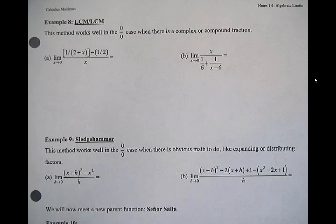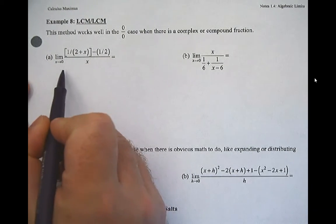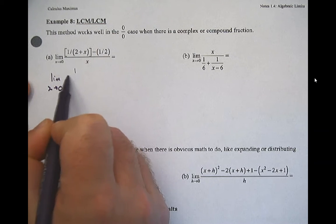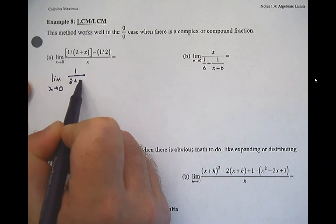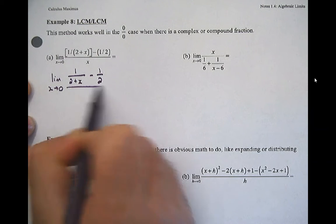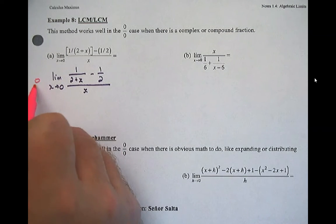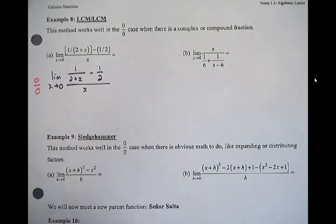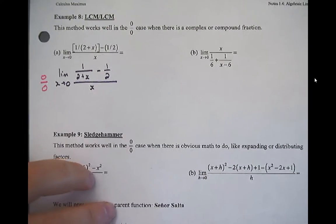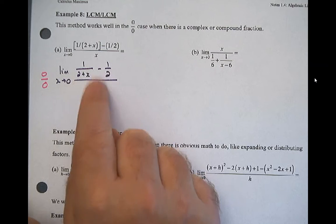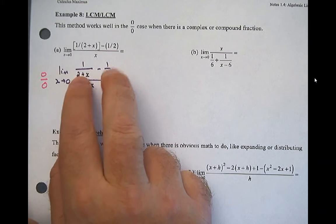Here we go again — never not first is direct substitute. I don't like the way this is written, so I'm going to rewrite it right off the bat. This is one over (two plus x) minus one over two, all over x. Plugging in zero: one half minus one half is zero over zero, which means we have a hole. So how do we clean up something like this? This is one of those where we want to kill off the complex fraction — a fraction within a fraction.